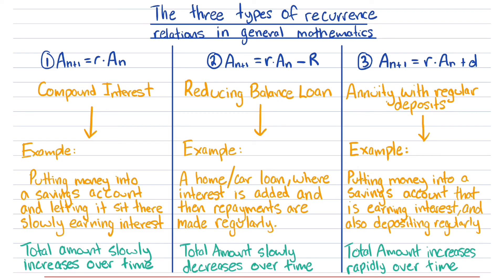It's going to increase a lot faster than the compound interest example, where the money is just sitting there but you're not putting anything else into the account. With an annuity recurrence relation, not only is your money earning interest, you're also depositing money, which causes the total amount to increase faster.